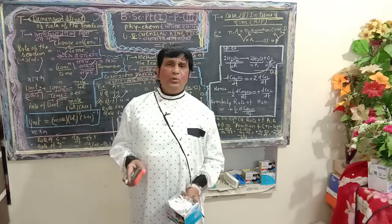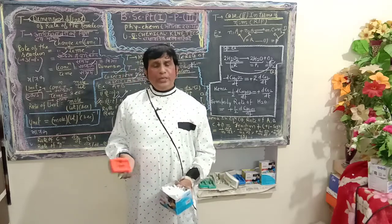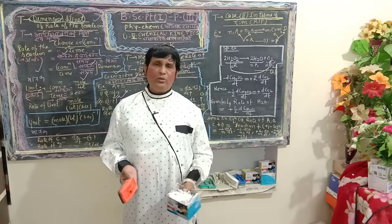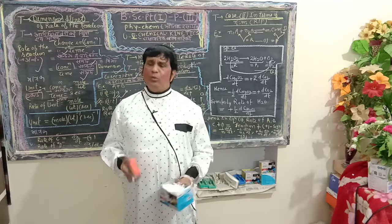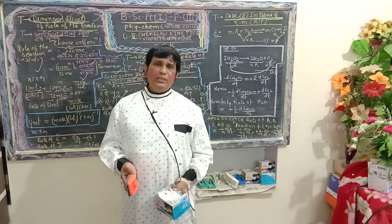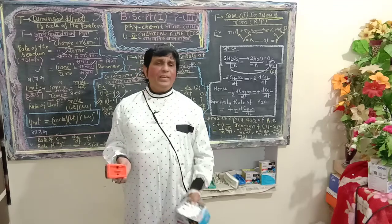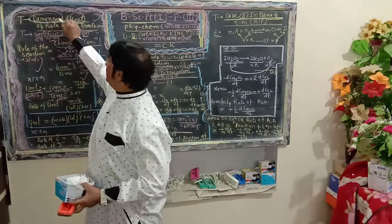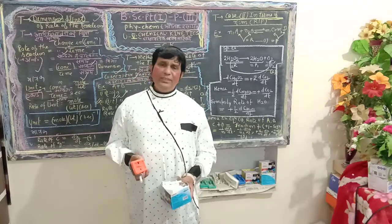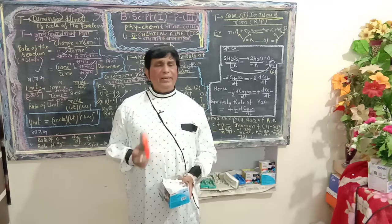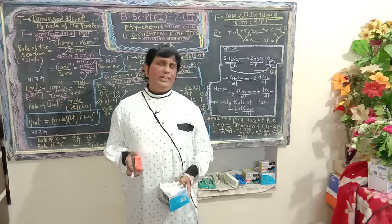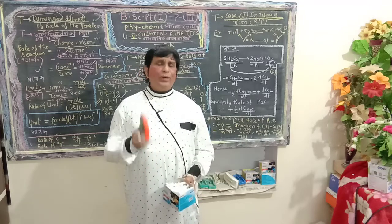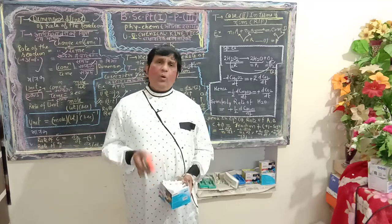So dear students of BSc Part 1, it is very essential to know the dimension and unit of rate of reaction in chemical kinetics. If you don't know the dimension and unit of rate of reaction for reactants and products, the study becomes meaningless. Dimension means a measured thermodynamic or physical quantity — a physical variable or state parameter. Unit is what is used to express or define that particular dimension.